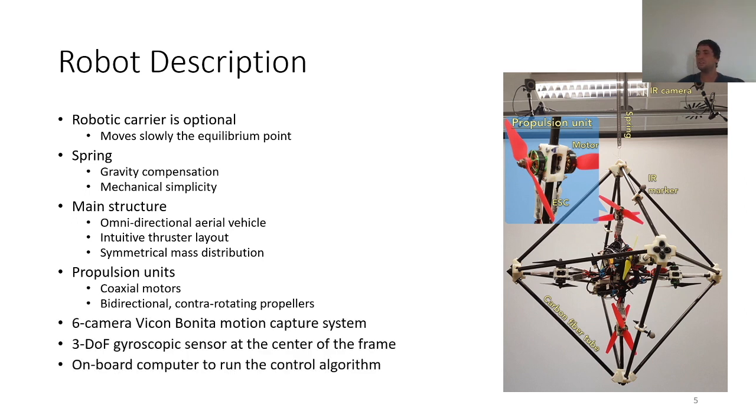For measurements we are using a six-camera Vicon motion capture system and a three degrees of freedom gyroscopic sensor at the center of the frame. Also, we have an onboard computer, a Raspberry Pi, that runs the control algorithm.